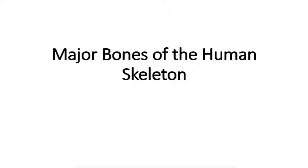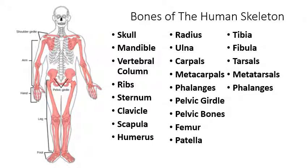Let's get to the human skeleton and memorize all the main bones — you are responsible for memorizing these, and I could ask any of them on a test. The skeleton is standing in anatomical position with feet and palm facing forward. The skull is at the top. The mandible is the technical name for the jawbone. The little pieces making up the spinal column are called vertebrae, so we refer to the backbone as the vertebral column. You know where the ribs are. The sternum is the central part, also commonly called the breastbone.